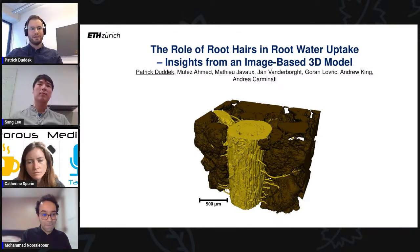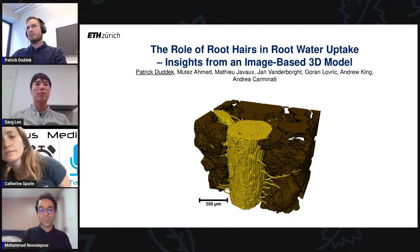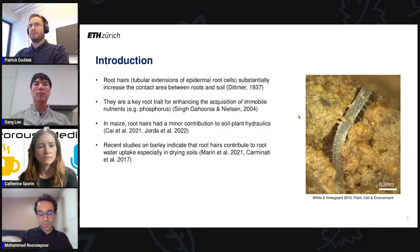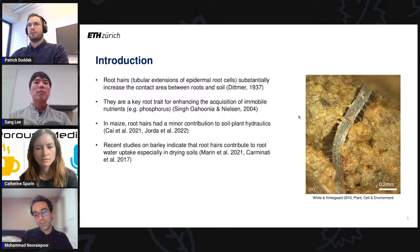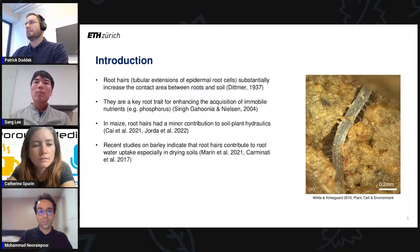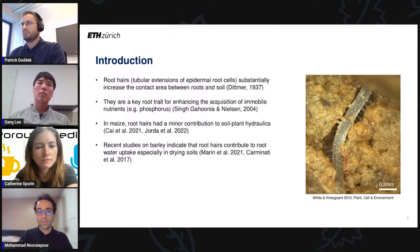Thank you very much, Mohamed, for your nice introduction. As you already said, my PhD is about the interactions between roots and soil. Today I'm going to present new insights we got from an image-based 3D model, which we implemented to get a mechanistic understanding of the role of root hairs in root water uptake. Root hairs are basically tubular extensions of epidermal root cells that substantially increase the contact area between roots and soil. If you look at the picture on the right-hand side, you can observe a root crossing a macropore, and many root hairs are keeping the contact between the root and the soil matrix, bridging this air-filled gap at the root-soil interface.